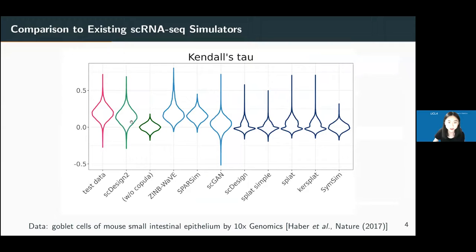This is an important plot showing our advantage in capturing gene correlations. The violin plot shows the distribution of gene correlations in real data, using Kendall's tau — a rank-based correlation more robust than Pearson and better for capturing ties than Spearman. Among existing simulators, SE-GAN is a deep learning method but is very slow and difficult to train. ZINB-wave and sparsene cannot capture negative correlations well. Our SC Design 2 without the copula technique does a poor job, but after using copula, it performs very well.